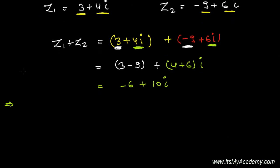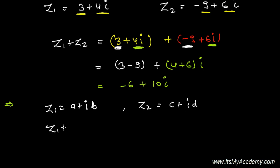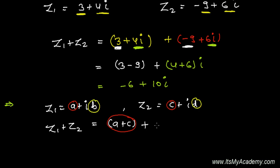In algebraic format, let's say Z1 equals a plus iB and Z2 equals c plus iD. Then Z1 plus Z2 is simply (a plus c), that is the real part added with the real part, plus i times (B plus D), which is the imaginary part added with the imaginary part.